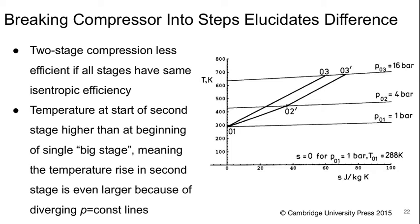The two-stage compression is less efficient if all the stages have the same isentropic efficiency. The reason is that the temperature at the start of the second stage is higher than at the beginning of a single big stage, meaning the temperature rise in the second stage is even larger than the first one because of the diverging p-equals-constant lines. Another way to see this is that the overall entropy rise is less for the single-stage machine than for the two-stage machine.